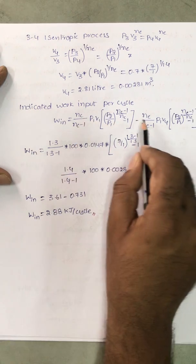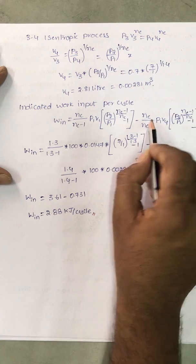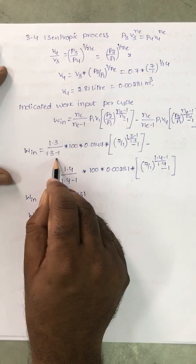Same formula here also because this is expansion. Expansion index you have to write Ne. So substitute Nc is equal to 1.3 by 1.3 minus 1.